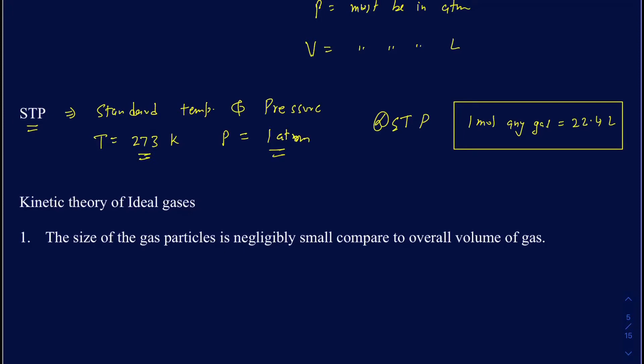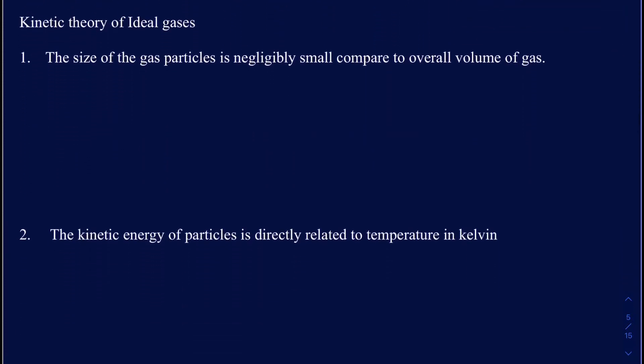We've been talking about ideal gases, but what really makes an ideal gas? In real life, when we deal with gas problems, they may not be very ideal. There are some criteria a particular gas must meet to be considered an ideal gas. The first criteria is that the size of the gas particles is negligibly small compared to the overall volume of the gas.